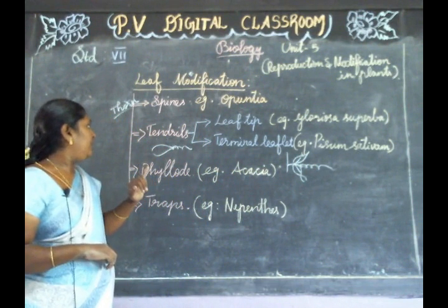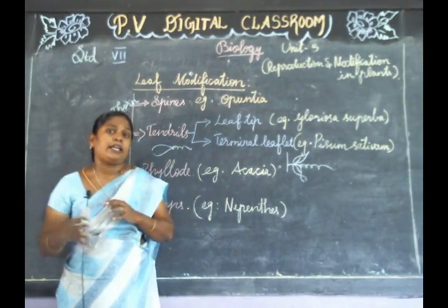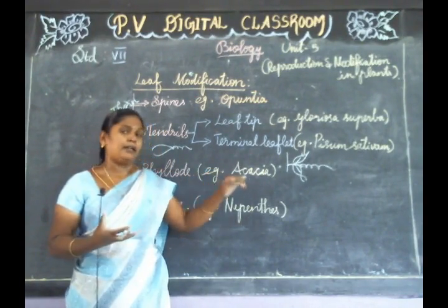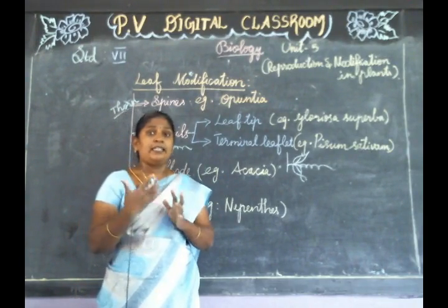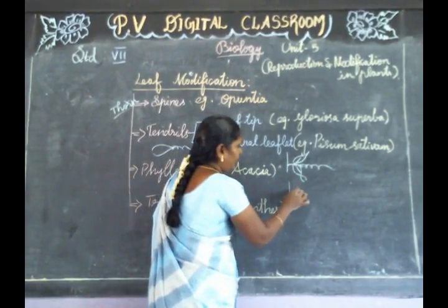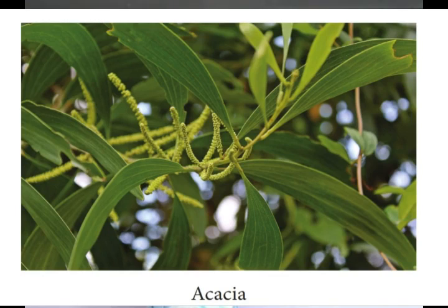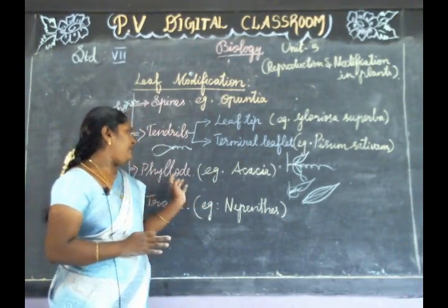The third modification is the phyllode. Phyllode is seen in Acacia plants. The plant does not have a leaf — the leaf's petiole region is modified. The petiole performs the function of photosynthesis in place of the leaf. That is the phyllode.